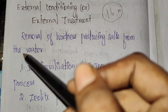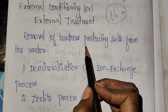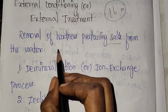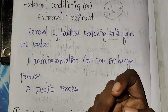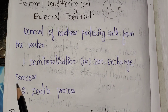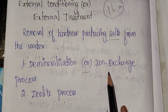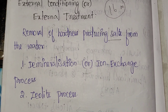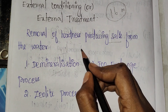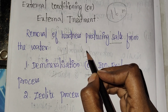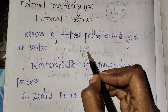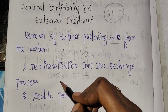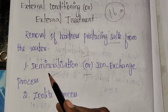External treatment means removal of hardness-producing salts from the water. There are two methods for external treatment. One is demineralization, also called the ion exchange process. The other one is the zeolite process.